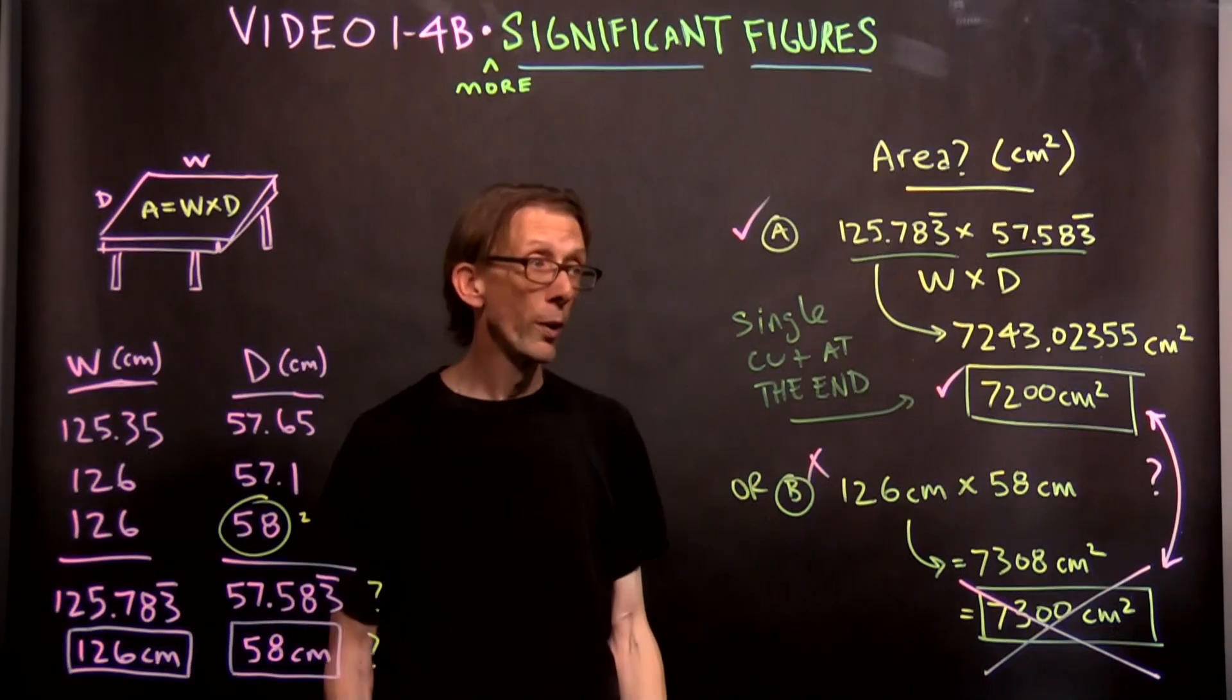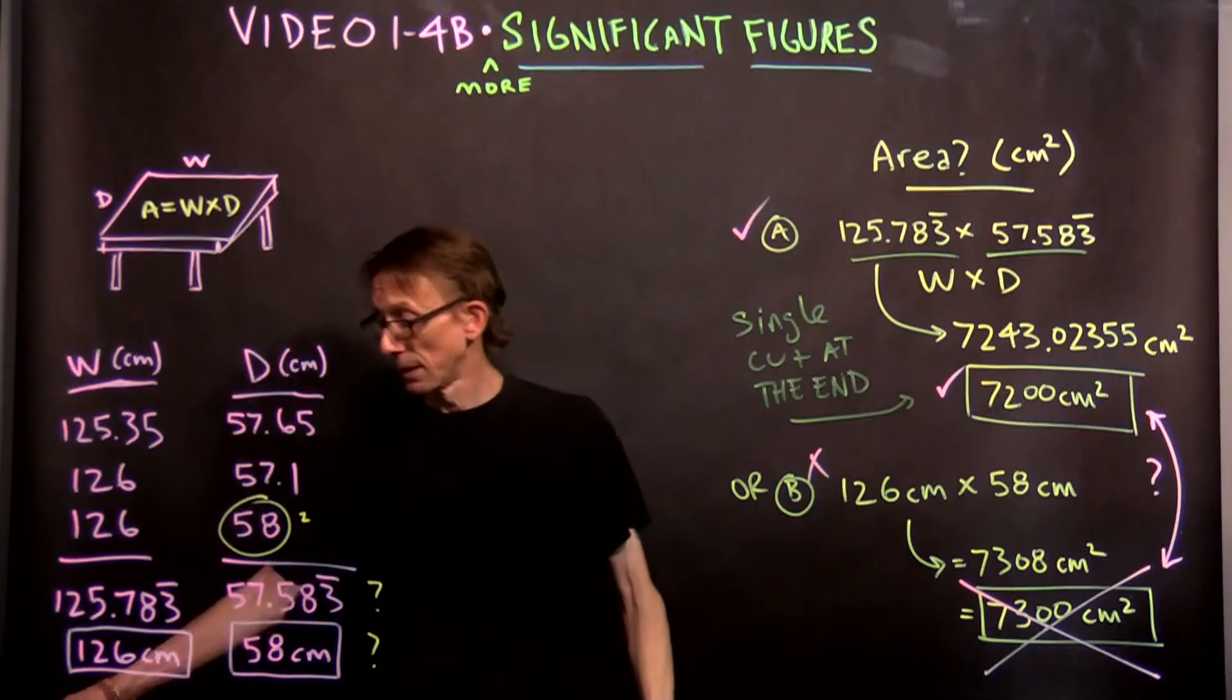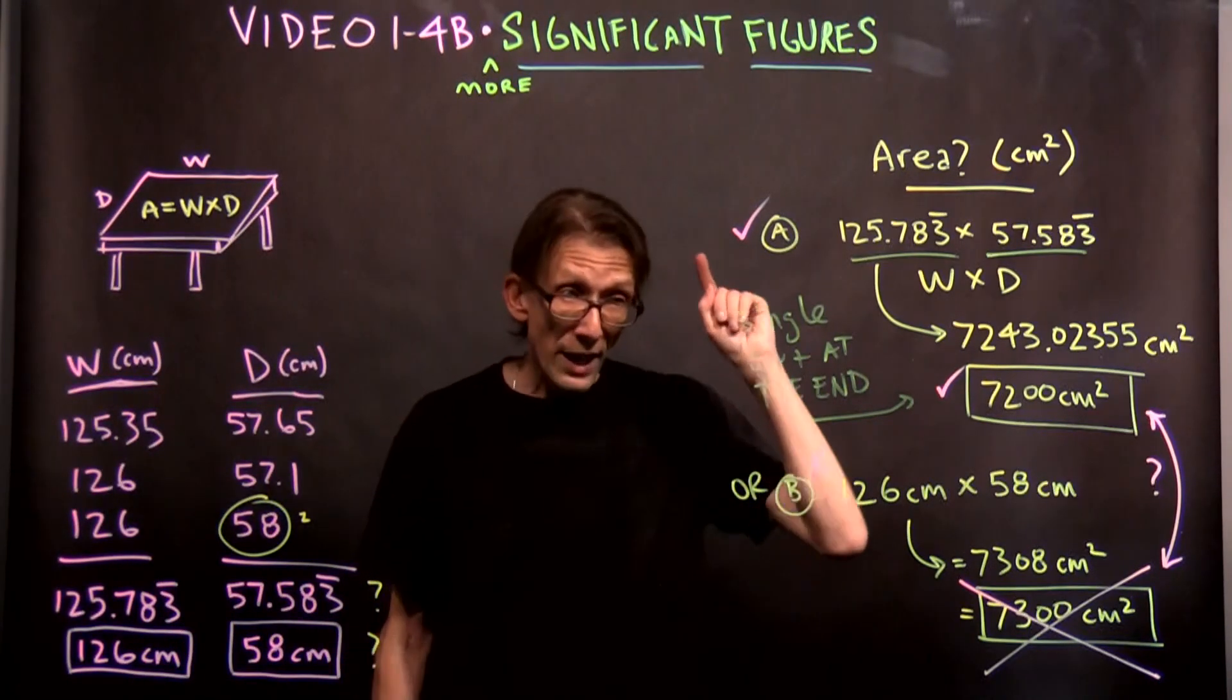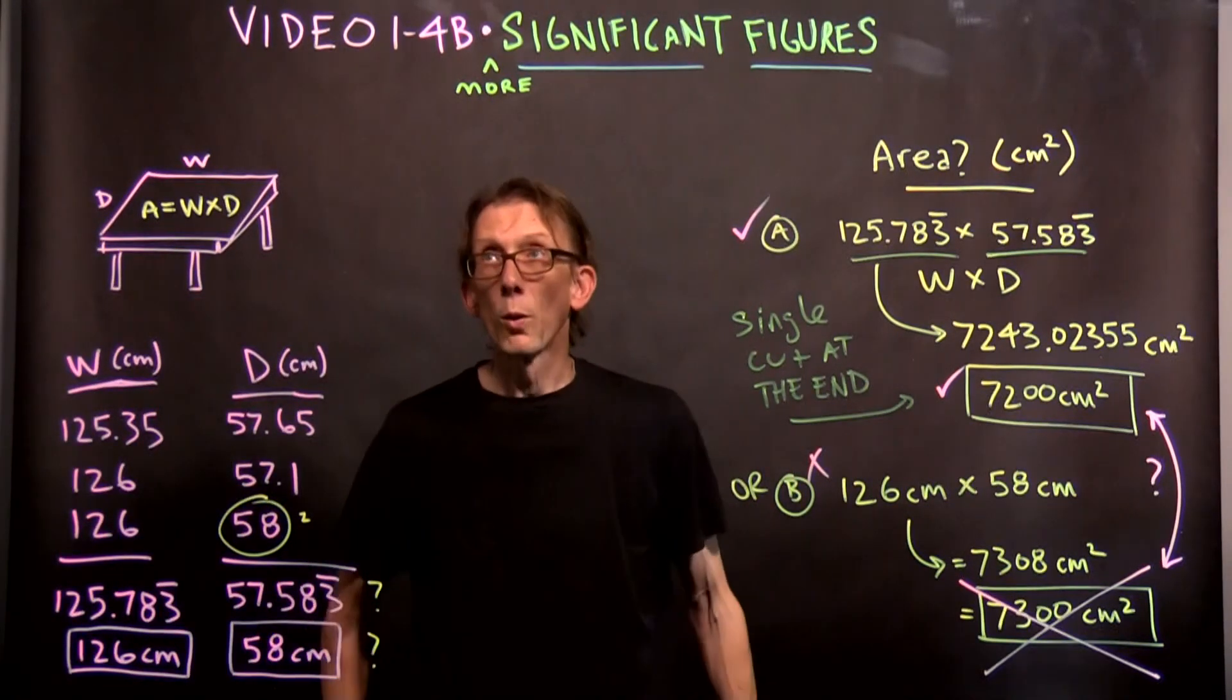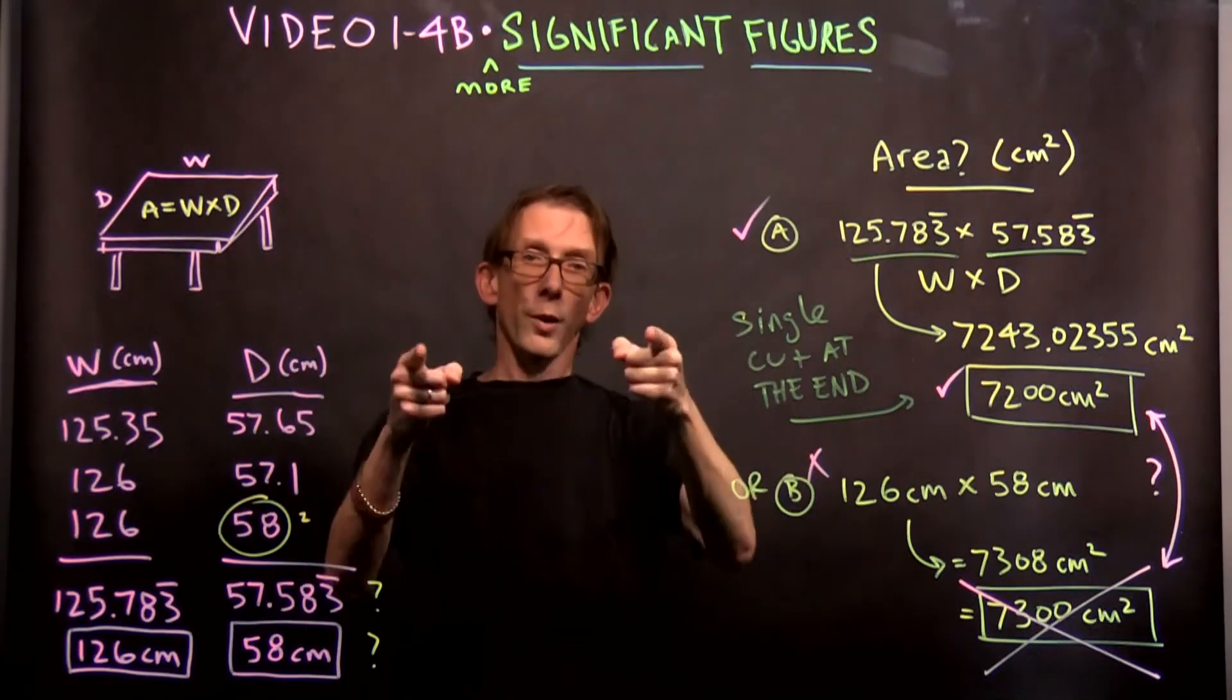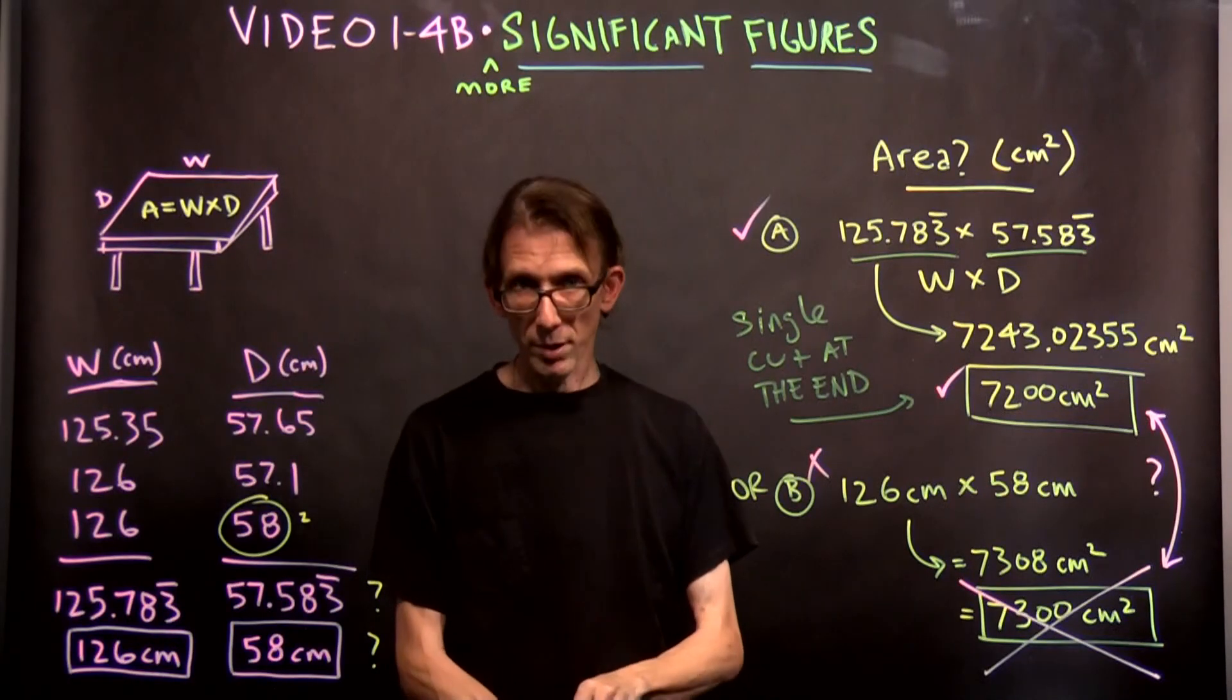So this is the only cut we make from that number to that number. From the 7243.02355 to the 7200. It's the only cut that we make the whole time. Okay. That's how you do your problems. You don't cut until the end. And speaking of the end, we're about a minute overdue with this video so I'm going to stop it and we're going to move on next time to a new topic. Scalars and vectors. So get ready.